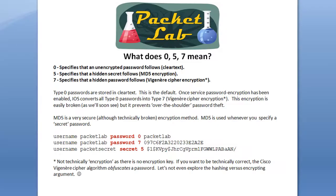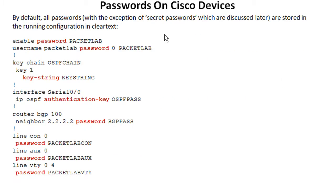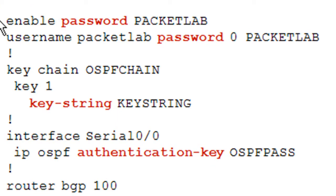We just saw that `service password-encryption` prepends a '7' to the password. There are actually three different type numbers: 0, 5, and 7. If you see `password 0`, that means the password is unencrypted — essentially clear text. You'll occasionally see this when service password-encryption is not enabled. For example, in the configuration before enabling encryption, the enable password shows in clear text without a '0,' but the username password shows a '0' after it, indicating it's clear text. It's not always shown, but it's useful to know what it means.